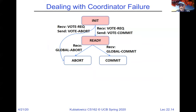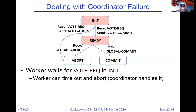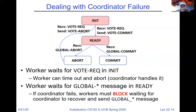How do workers deal with coordinator failure? We wait in a couple of places: for the vote request from the coordinator, and if we want to commit, we go to the ready state and wait to find out the decision. Once the worker has said vote commit, it has to find out what the decision was — the only way forward is by hearing from the coordinator. So in this instance, we have to just stall. This is part of why two-phase commit is a blocking protocol.